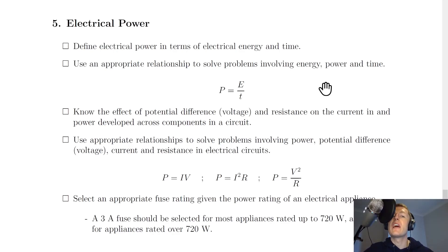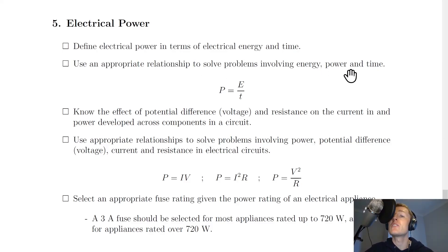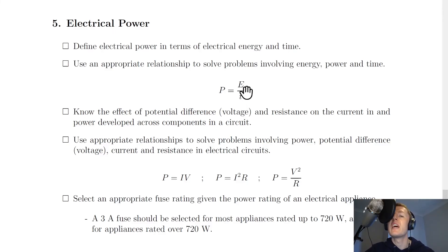Lastly, section five is electrical power. You need to define electrical power in terms of electrical energy and time: electrical power is the rate at which energy is transferred, or the electrical energy transferred each second. You need to use the relationship P = E/t, where power is measured in watts, energy in joules, and time in seconds.